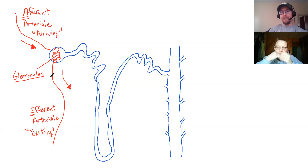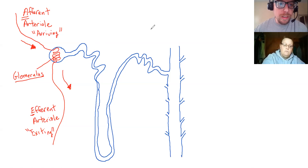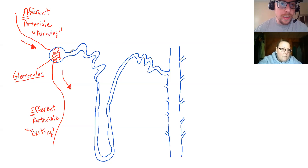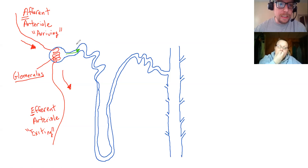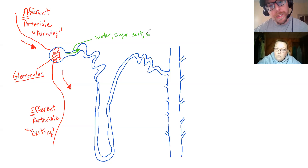So you have an afferent arteriole that brings blood in and an efferent arteriole that takes blood out. That blood that's being taken out is cleansed blood - the waste is removed from it. So what gets removed from the glomerulus? Most of what gets eliminated from blood is water, sugar, salt, and metabolic waste. Those are most of the things that get filtered out.